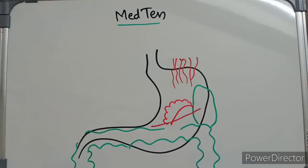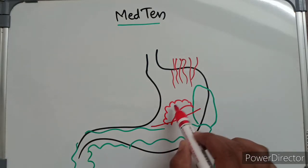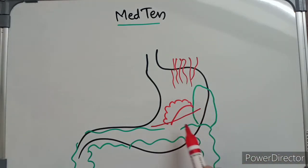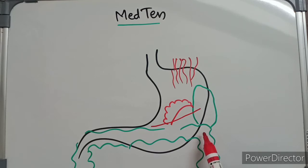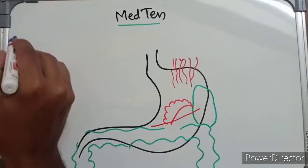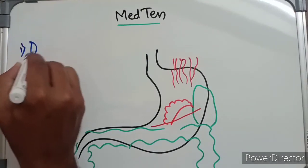The arteries supplying to the spleen, which is nothing but the splenic artery, will also form the stomach bed. So what are the things forming the stomach bed? It's very simple: transverse mesocolon, kidney, suprarenal gland, diaphragm, spleen, splenic artery, and the splenic flexure. Number one: diaphragm.